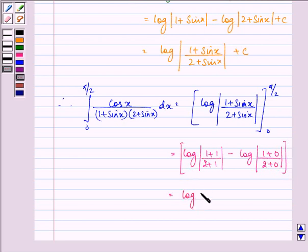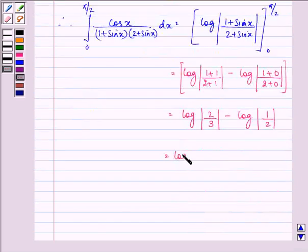we have log mod 2 upon 3 minus log 1 upon 2, which is equal to log 2 minus log 3 minus log 1 plus log 2.